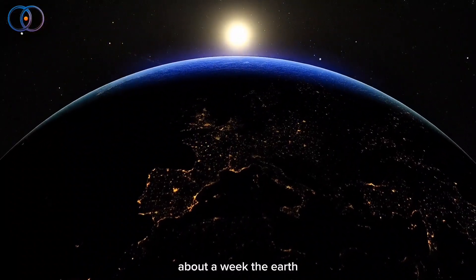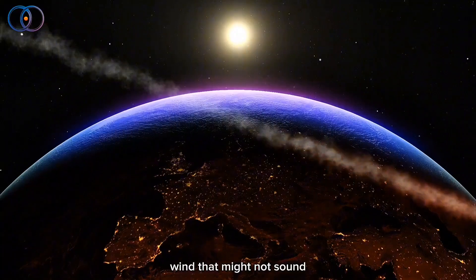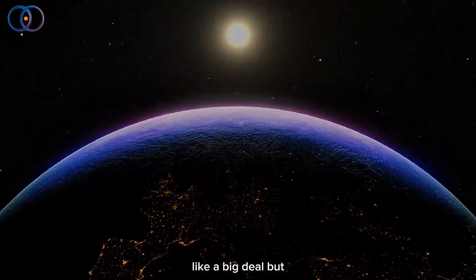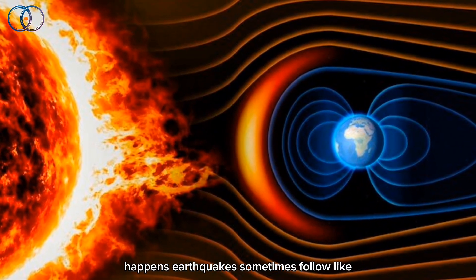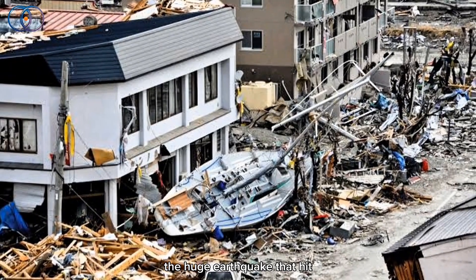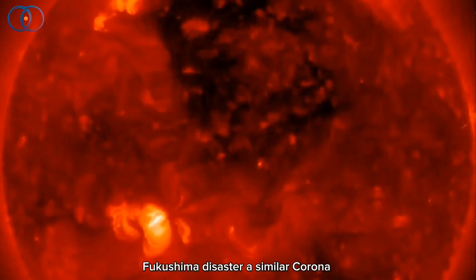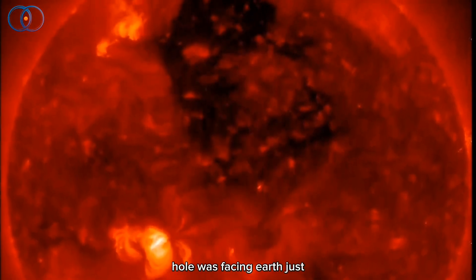When it does, for about a week, the Earth will be getting hit with all this super-fast solar wind. That might not sound like a big deal, but past events show that when this kind of solar activity happens, earthquakes sometimes follow, like the huge earthquake that hit Japan in 2011, causing the Fukushima disaster. A similar coronal hole was facing Earth just days before that.